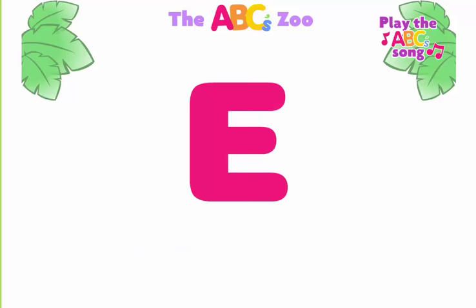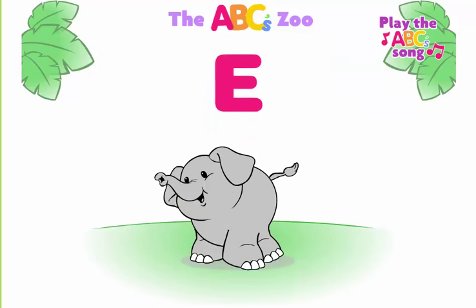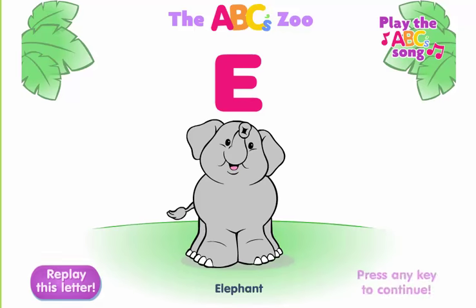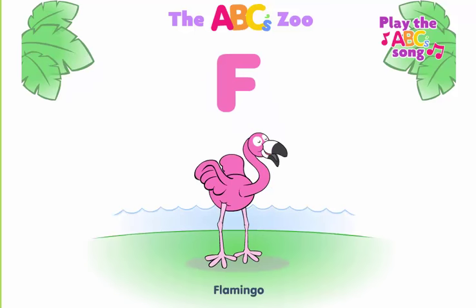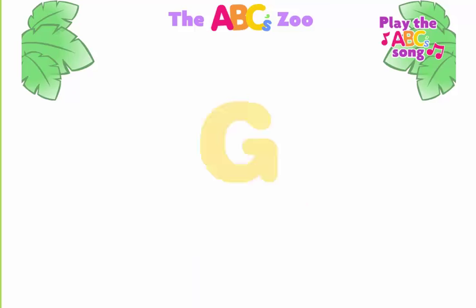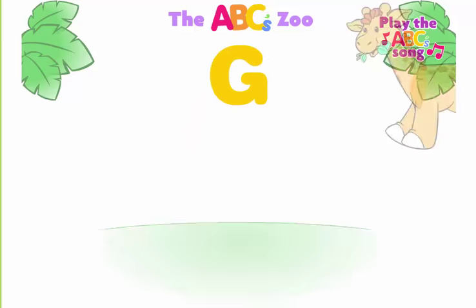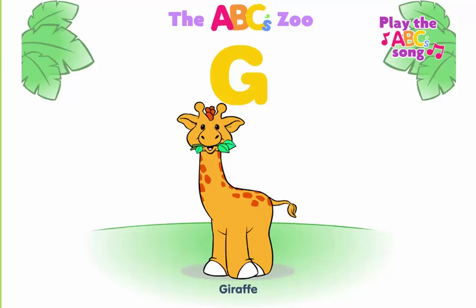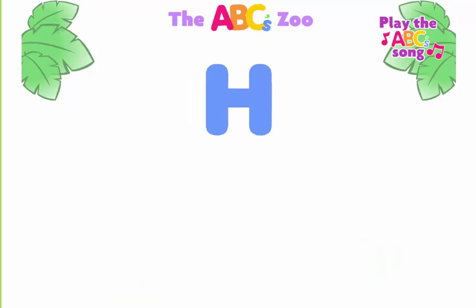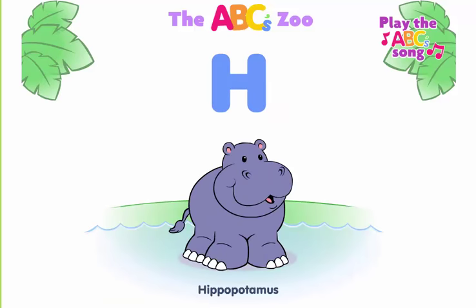E, elephant begins with E. F, flamingo begins with F. G, giraffe begins with G. H, hippopotamus begins with H.